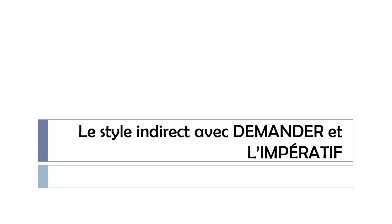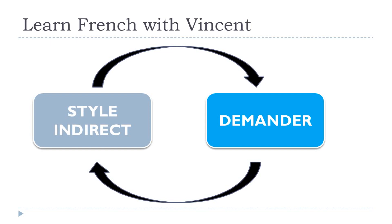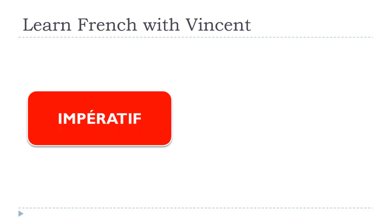In this lesson, we'll see le style indirect avec demander et l'impératif. We'll continue this series covering le style indirect and more precisely the interaction between le style indirect and the verb demander — which means 'to ask'. We'll see how it works when, in the direct speech, you have an imperative.